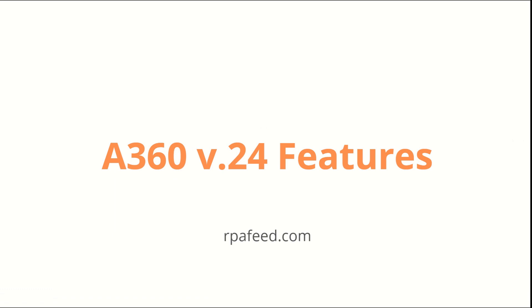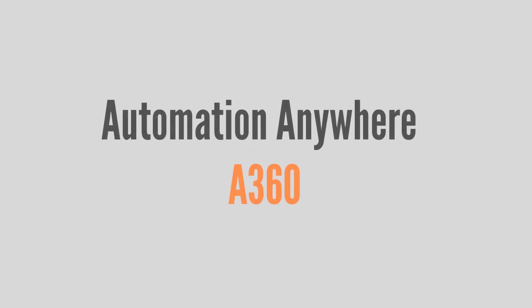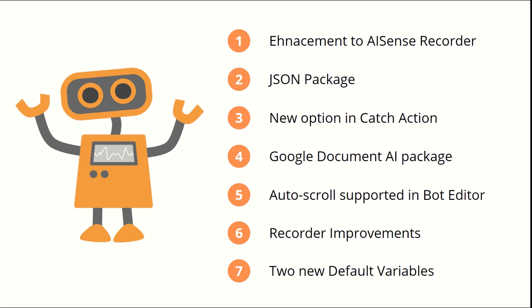Hey guys, welcome to RPA Feed. In today's session we will be looking at new features of A360 version .24 release. We'll be covering seven features added into this release. That doesn't mean .24 release only has these seven features — these are completely my take on the ones you must know, but there are many other features in this release. You can check them out on the official documentation page. Let's see all these seven features in detail.